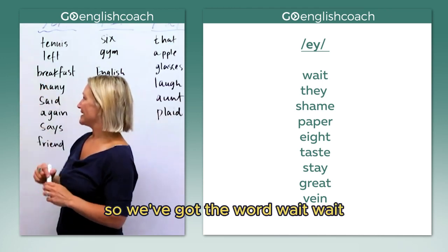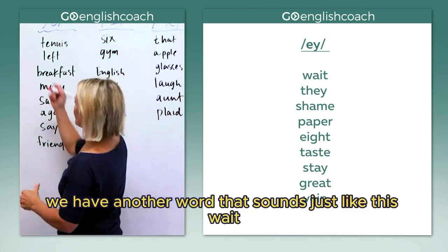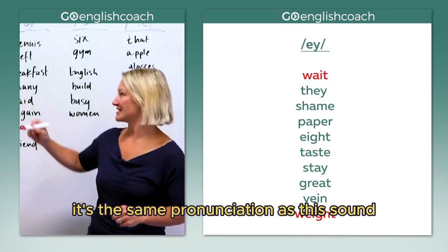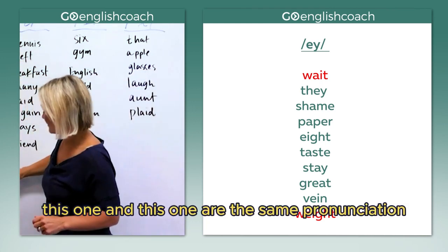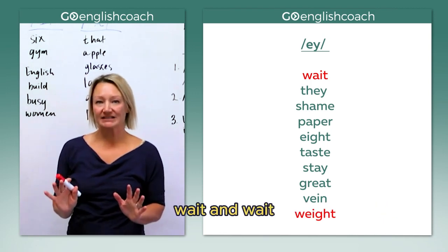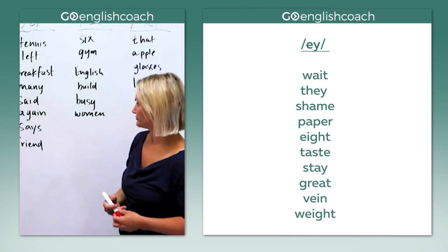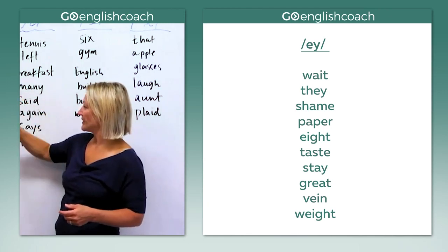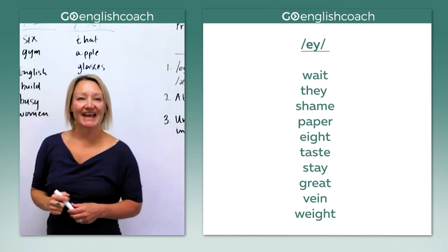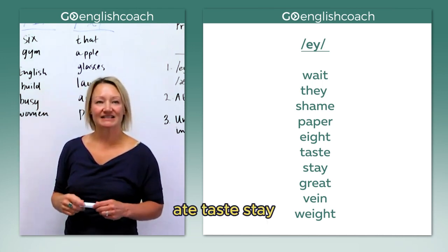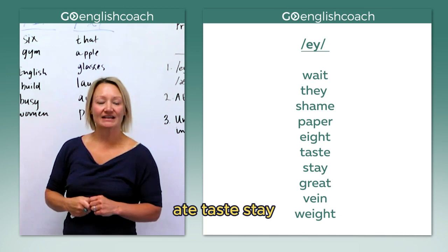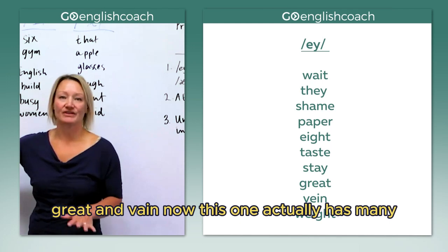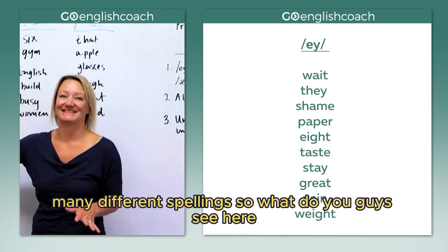So we've got the word 'wait.' We have another word that sounds just like this — wait and weight. They have the same pronunciation. Then: they, shame, paper, ate, taste, stay, great, and vain. Now, this sound actually has many, many different spellings.